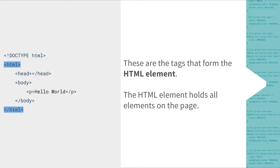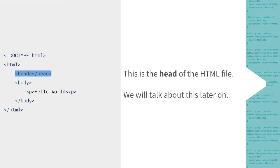Inside of the HTML element we have the head, and the head is a child of the HTML element. Because it is a child, we put it inside the HTML tag on its own new line and use a tab to show that it belongs to the HTML element. This makes no difference in the browser, but it makes it a lot easier for us to read.